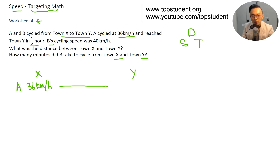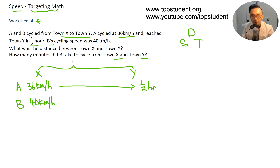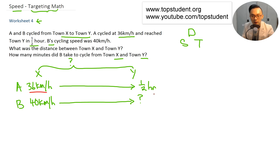A reached town Y in half an hour. B's cycling speed is 40 kilometers per hour. What's the distance between town X and town Y? We have the speed and the time for A, so we can find the distance.